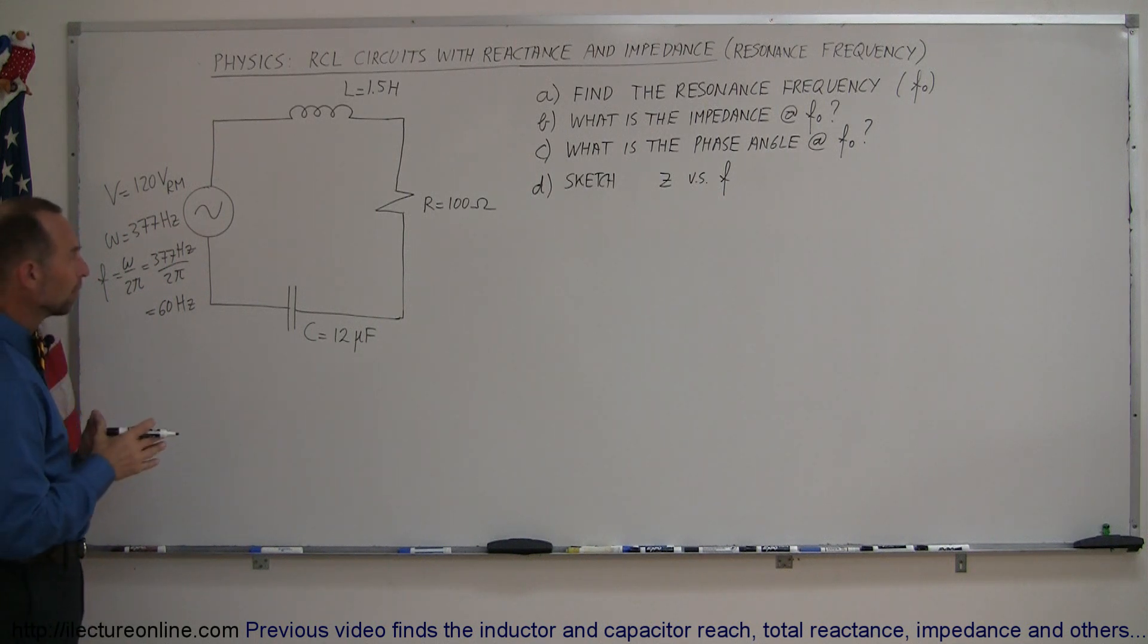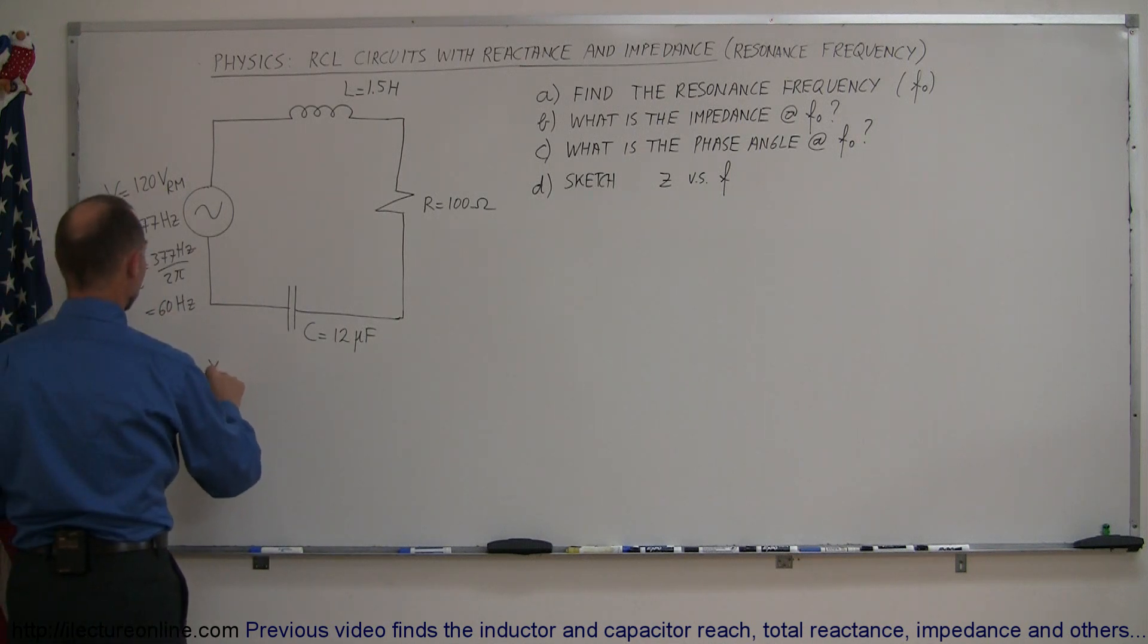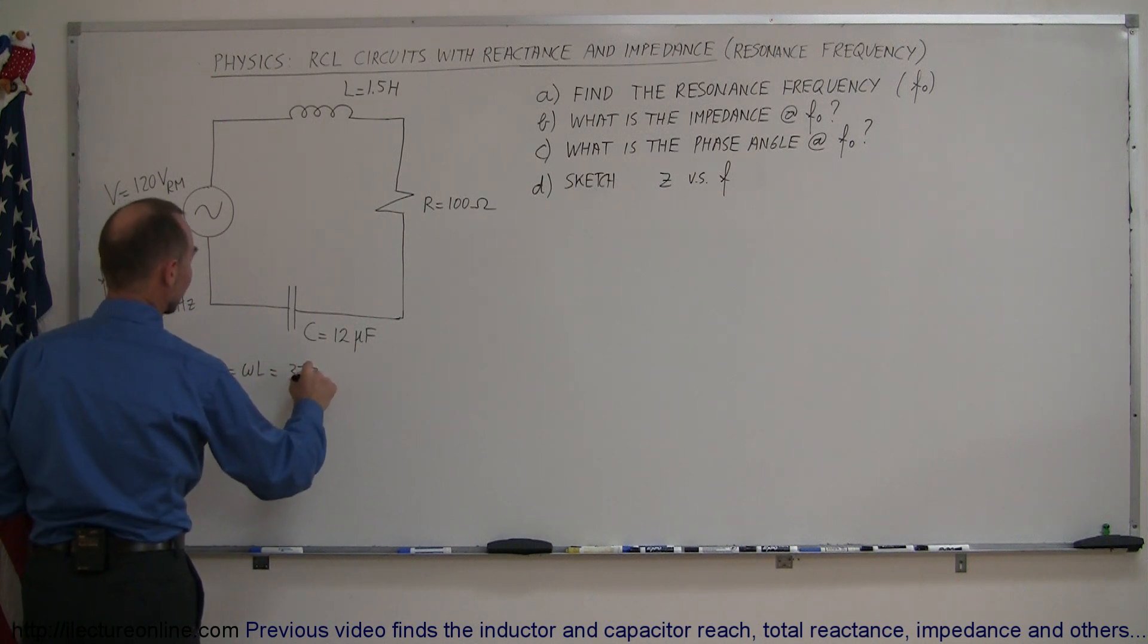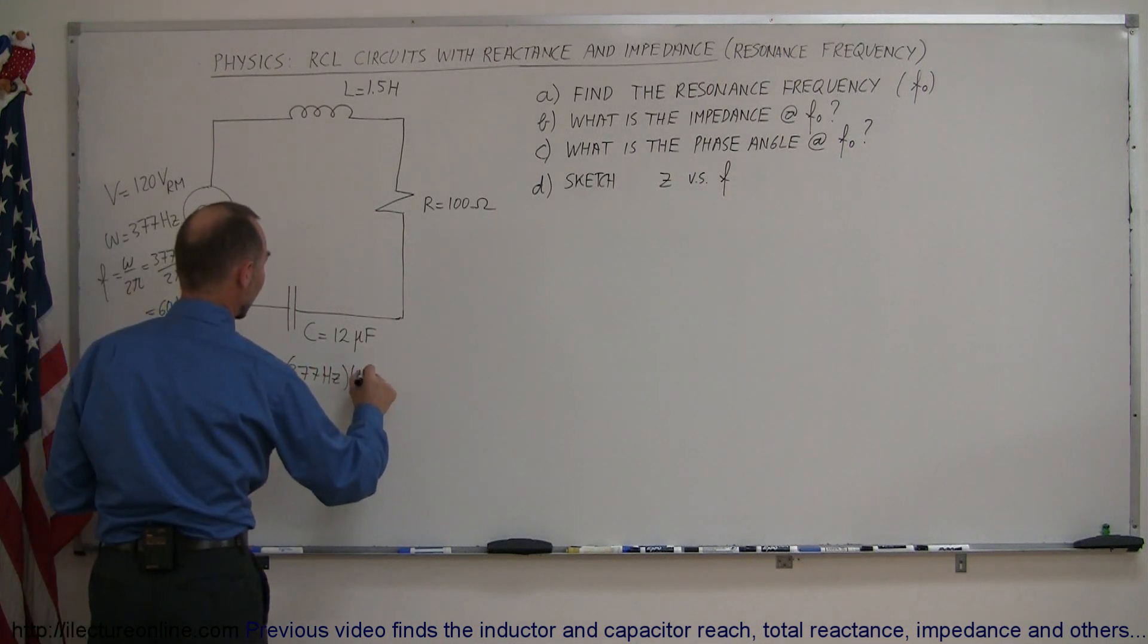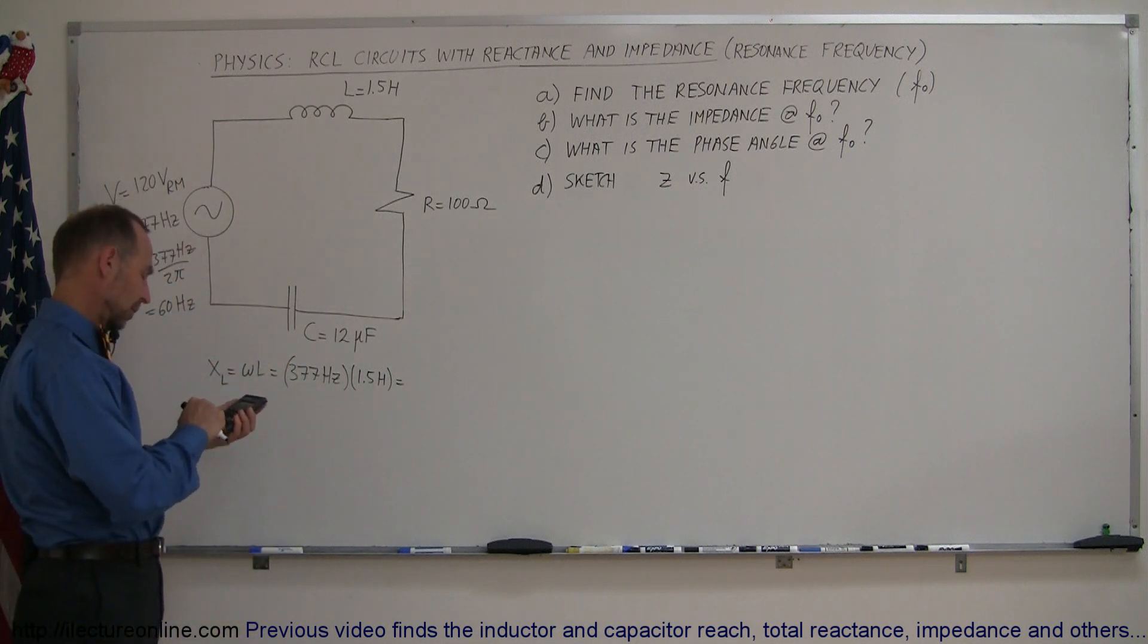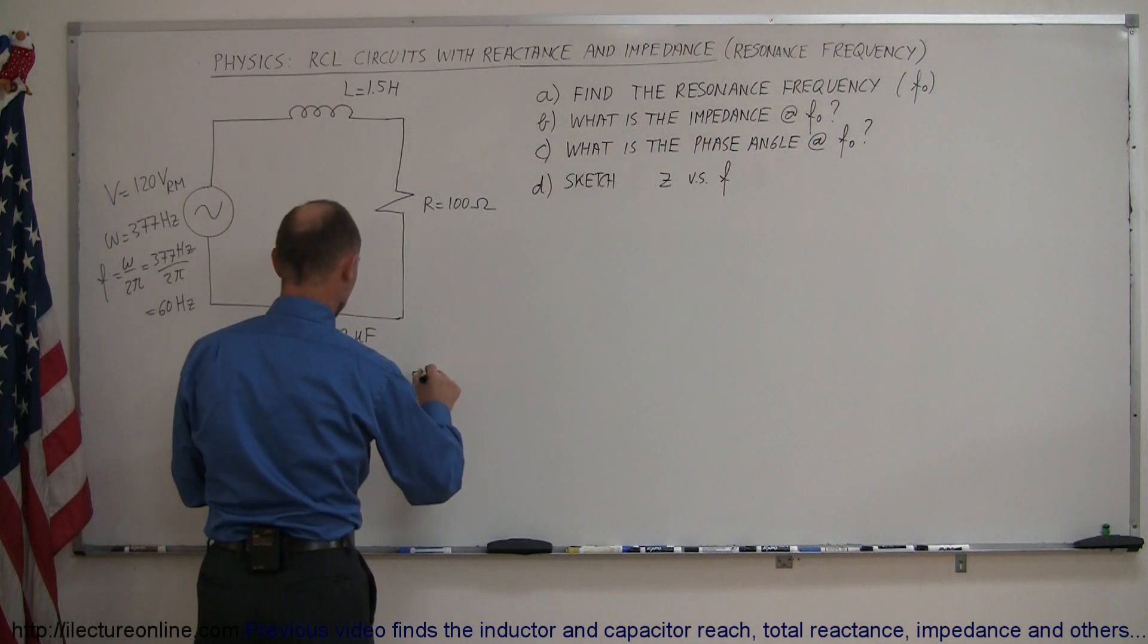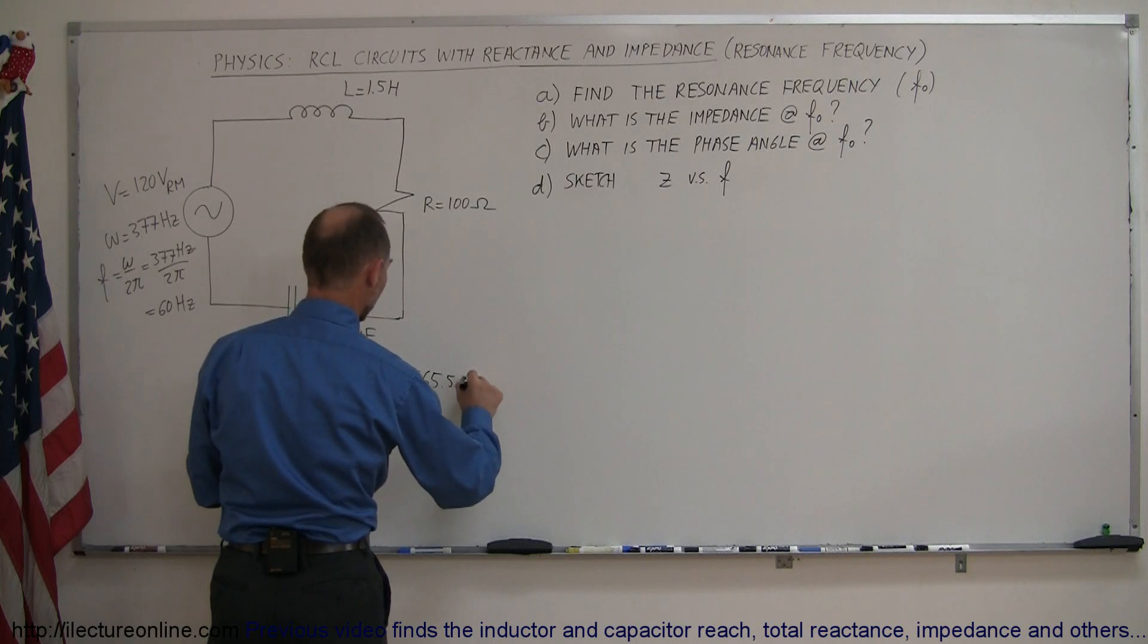Now let's find, at this particular frequency, what the inductive reactance and the capacitor reactance is. At this frequency, the X sub L would be equal to ω times L, which is equal to 377 Hertz times the inductance, which was 1.5 Henrys. So we have 377 times 1.5, so we get 565.5 ohms.